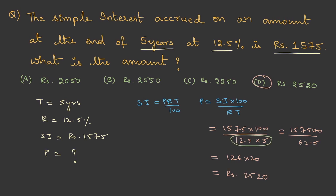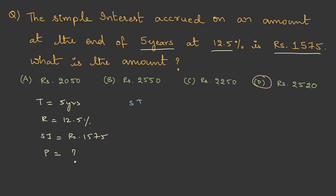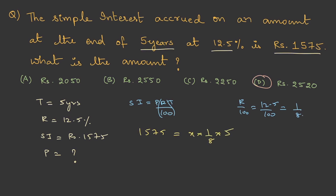The denominator with a decimal makes that calculation hectic, so let's use a shortcut. Focus on R/100: 12.5/100 = 1/8. Substituting: 1575 = P × (1/8) × 5, so 1575 = P × 5/8. Cancelling, 315 × 8 = P, therefore P = ₹2,520.